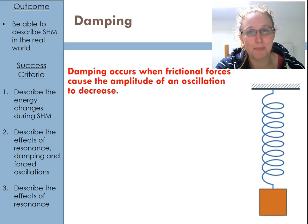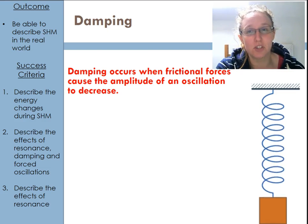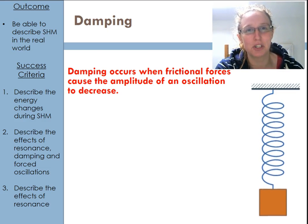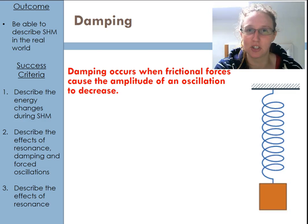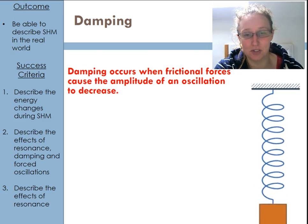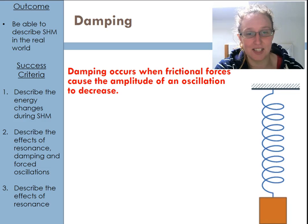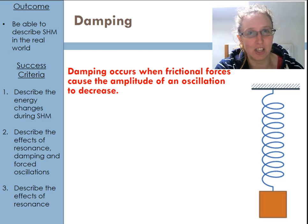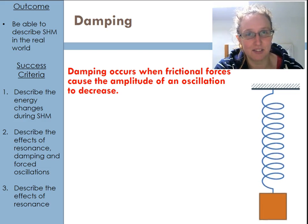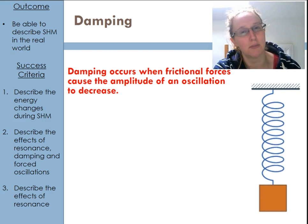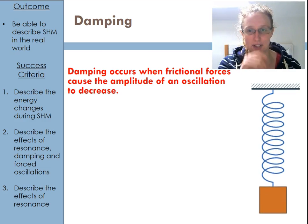Damping is basically when frictional forces cause the amplitude of the oscillation to decrease. It's the reason why when you start a spring bouncing, it doesn't just bounce forever. There is an oppositional or frictional force of motion, so the simple harmonic motion doesn't just go on indefinitely.